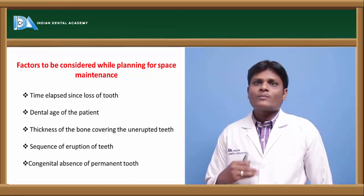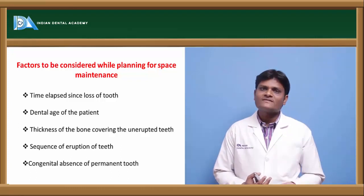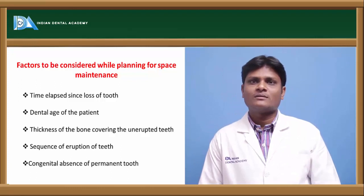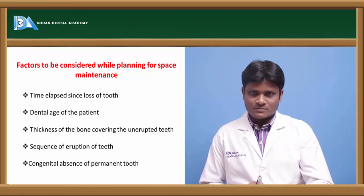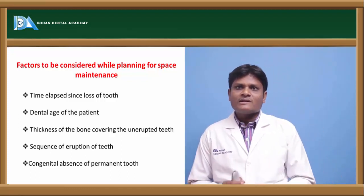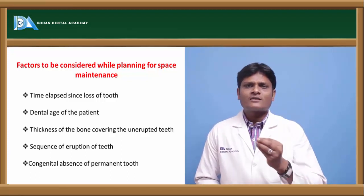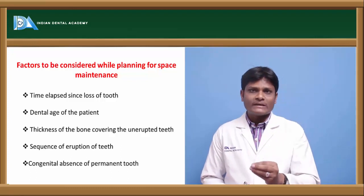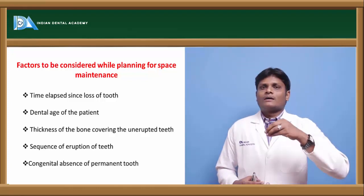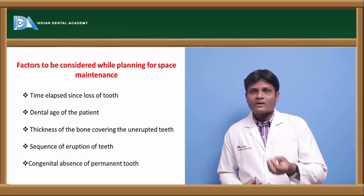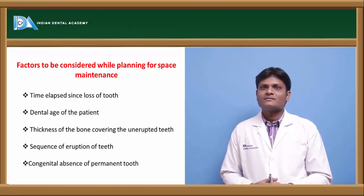Factors to consider before planning space maintenance: First, time elapsed since loss of tooth. Once a deciduous molar is prematurely exfoliated, within the immediate six months there is maximum probability for drifting of adjacent teeth into the exfoliation space. It is always advised to give a space maintainer as early as possible — immediately after exfoliation of the deciduous tooth. The space maintainer should be planned and delivered to the patient as early as possible.